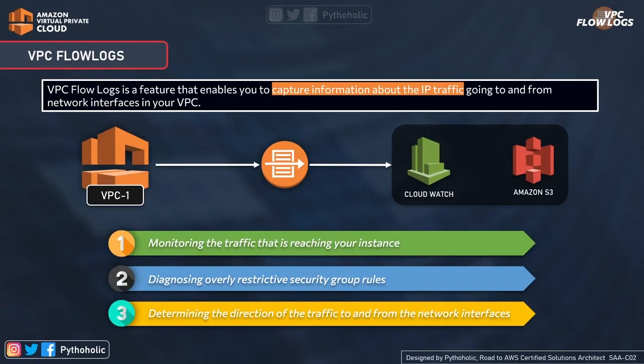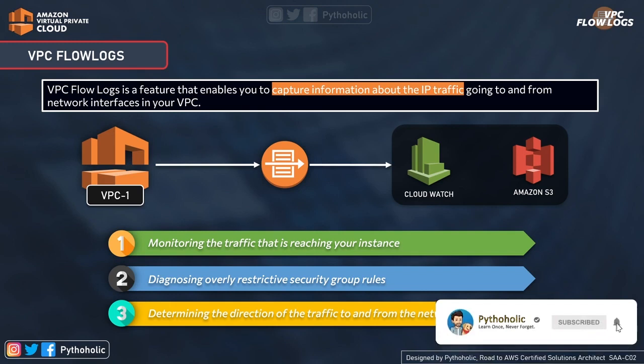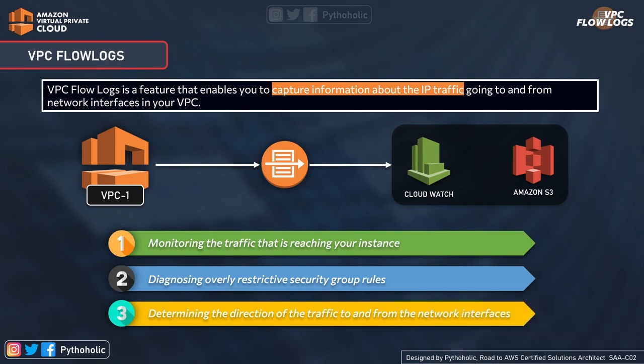VPC flow logs is a feature that enables you to capture information about the IP traffic going to and from the network interfaces in your VPC. When you read about it being a feature, imagine having an option to switch it on or off for a service you are currently using. You can publish the flow log data to Amazon CloudWatch Logs or Amazon S3, and you have to go to either of these services to view the logs. There are many benefits, with three points actively mentioned in the documentation.